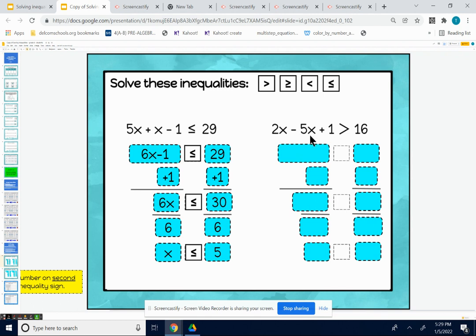We have 2x minus 5x plus 1 is greater than 16. Look for parentheses first. There isn't any. Look for like terms. There are some like terms. So we have a 2x and a negative 5x.